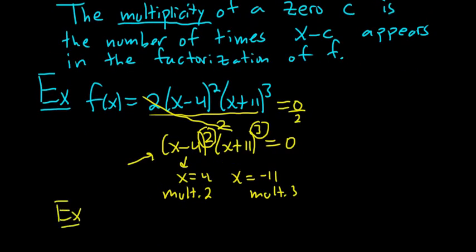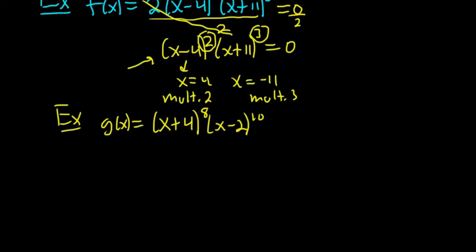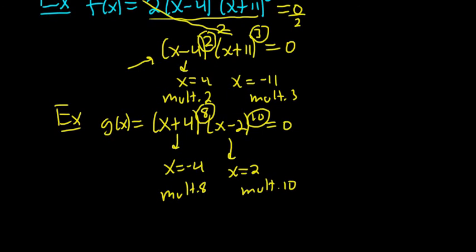Here's another example. Say we had g(x) equals (x+4)⁸(x-2)¹⁰. So in this case if you wanted to find the zeros, same thing, you set this equal to zero. You can see here it's negative 4, whatever makes it zero. And then 2 is what makes this zero. So those are the zeros. In the first case the multiplicity is 8, and in the second case the multiplicity is 10. And that's it.